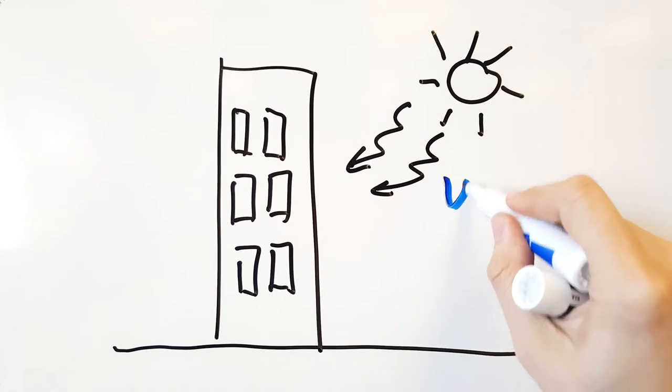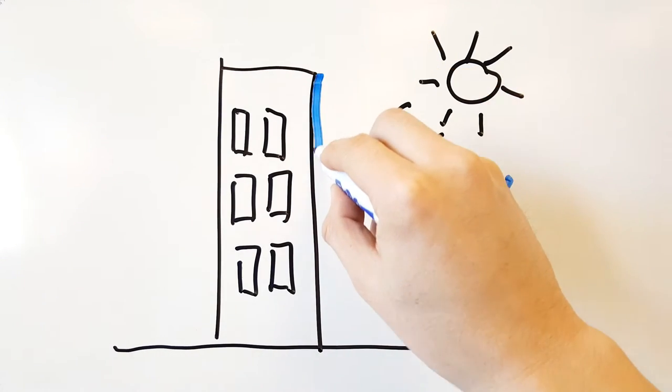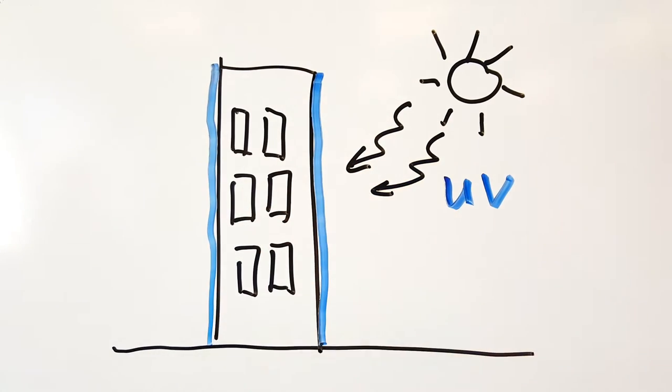When the sun shines, UV light activates the nanoparticles to produce powerful oxidants known as free radicals.